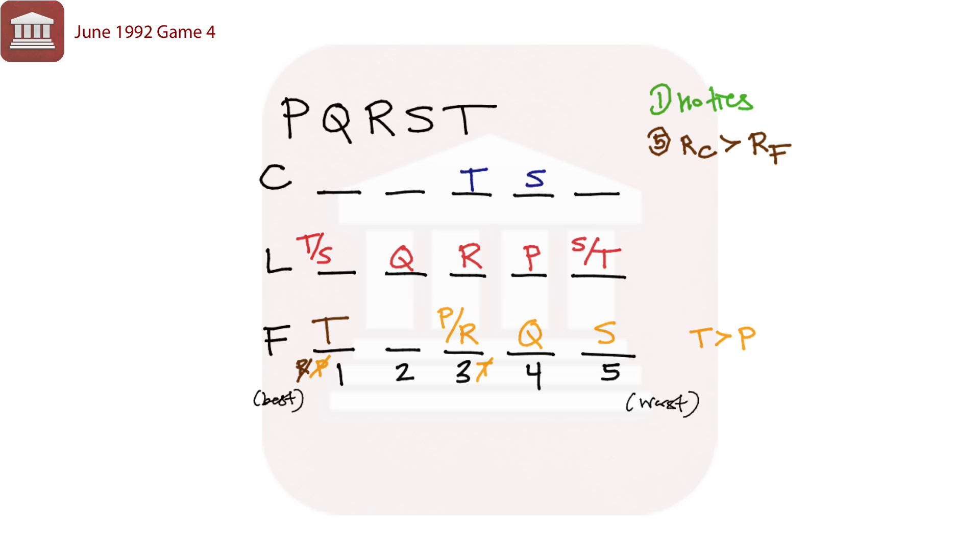Which would then tell us that the second position is going to be the other of R or P, the one that doesn't appear third. That also is going to tell us that R cannot appear fifth in climate. And at that point, the only variables remaining are Q, P, and R, so we know that this would have to be either Q or P.